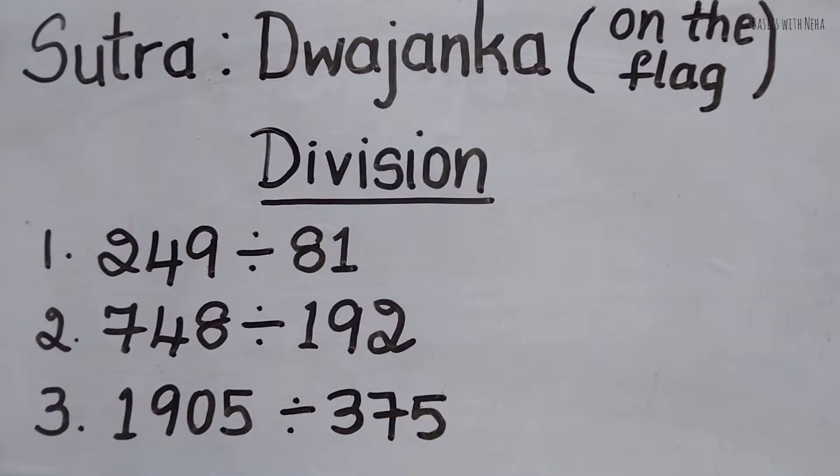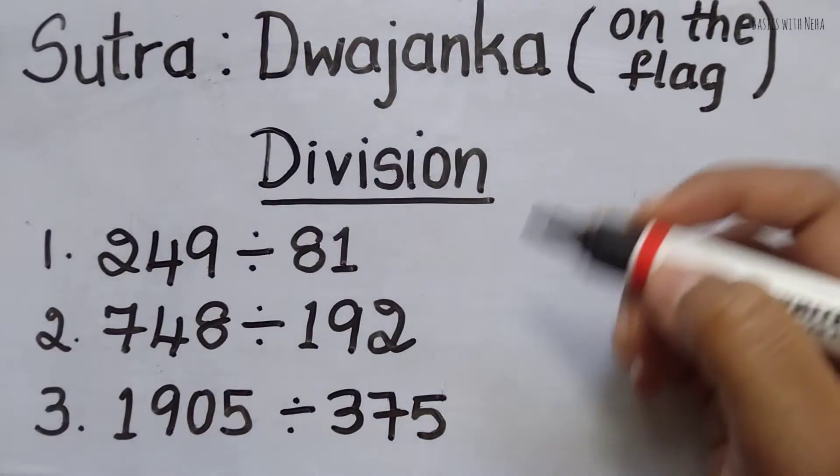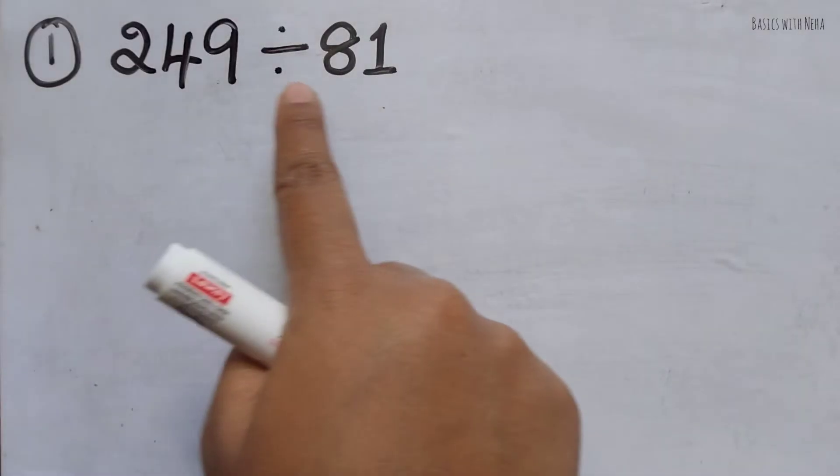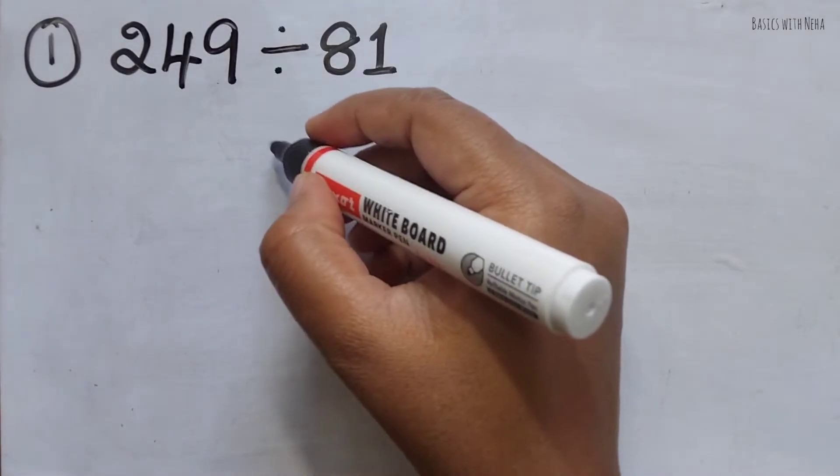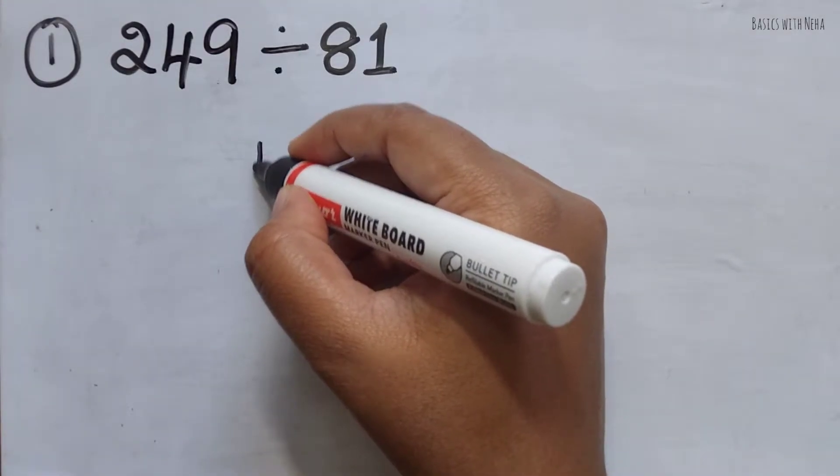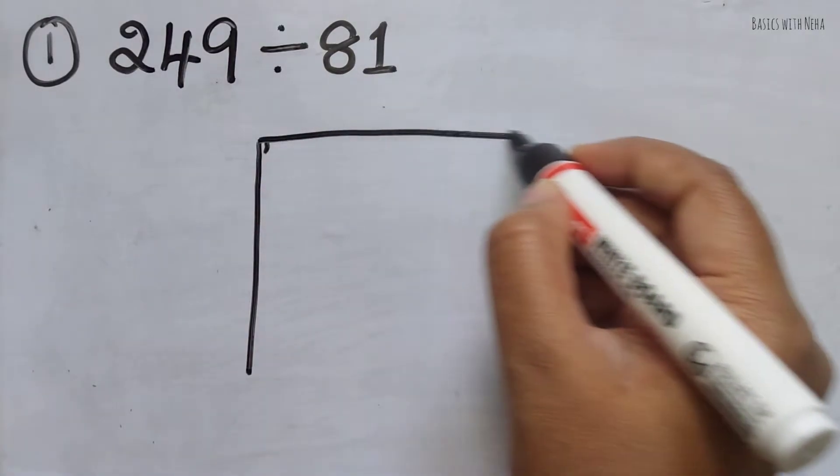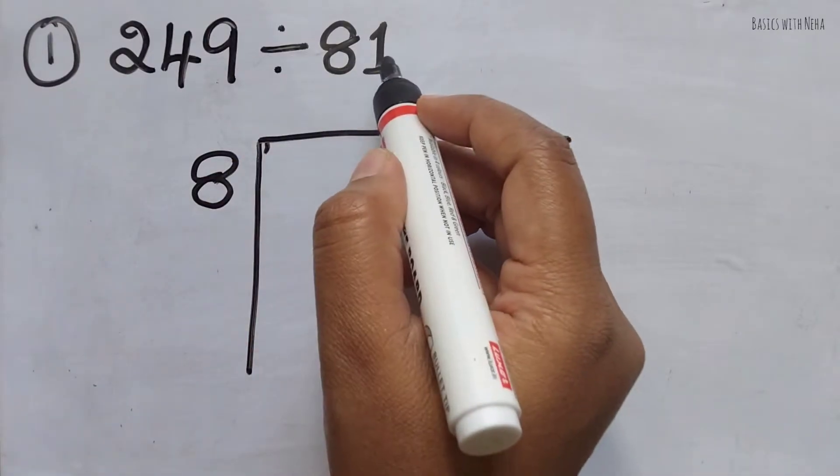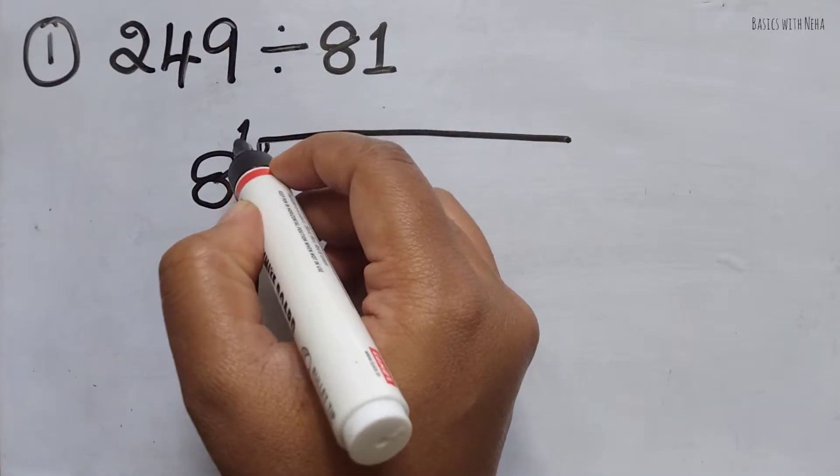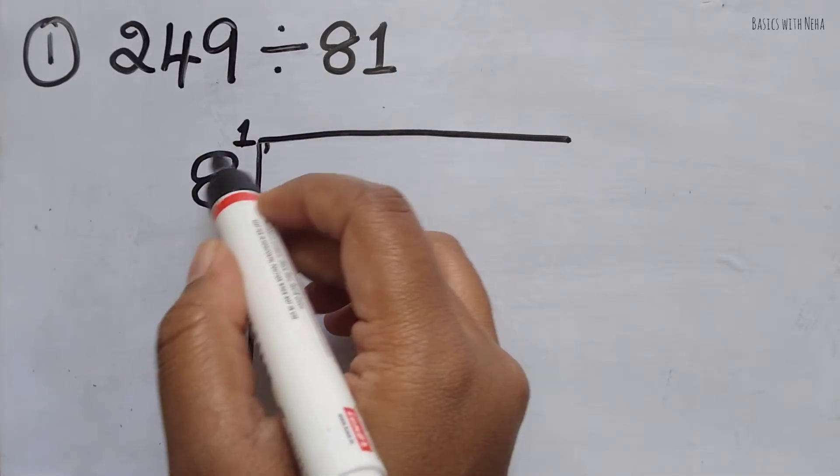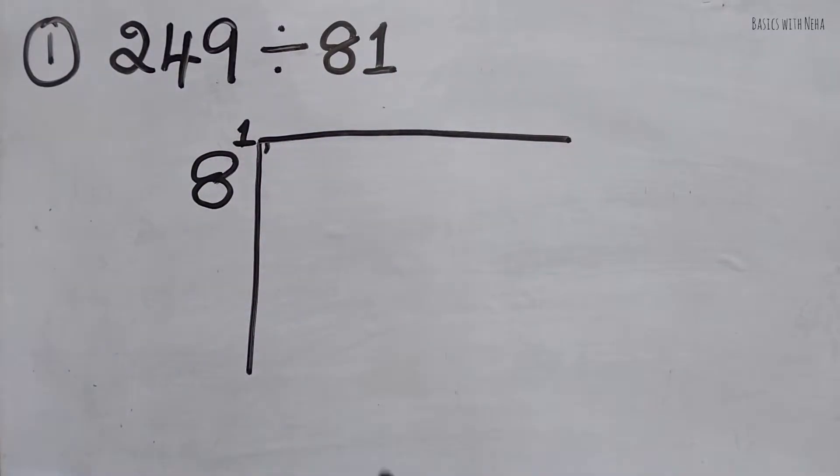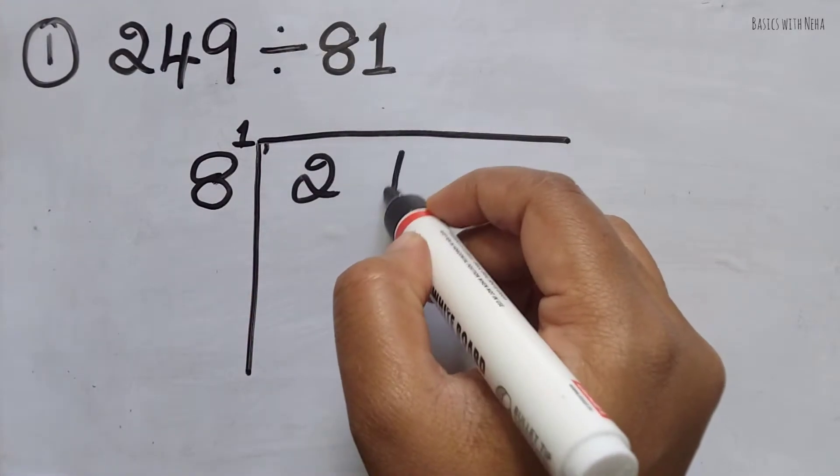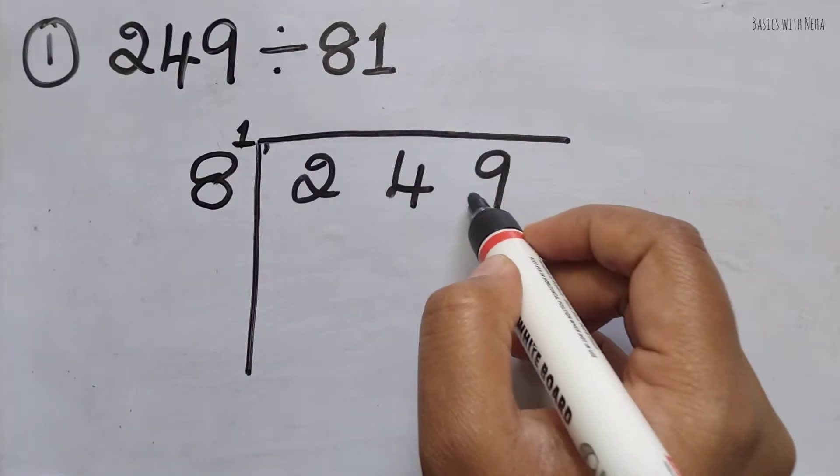Let's try these three sums using this particular sutra. First question: 249 divided by 81. Let me show you how to write this. You're going to draw something like this, then write the divisor 8, and this one should be taken as the power of 8. So that becomes the Dvajanka and this becomes the Mukhyanka - that is the 'on the flag' concept. Now we're going to write 249, which is the dividend, leaving a little space between each.